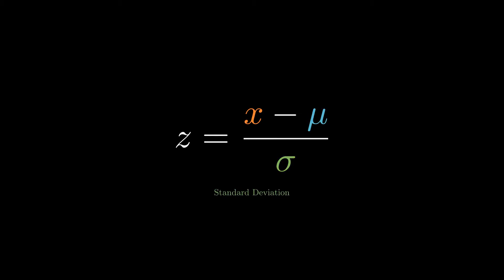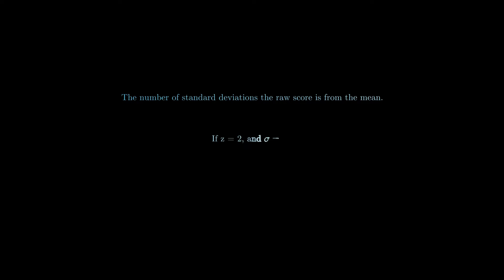and divide the difference by the standard deviation to ultimately get the z-score. The z-score represents the number of standard deviations the raw score is away from the mean. If you have a z-score of 2 and a standard deviation of 10, then the raw score corresponding to that z-score is 2 times 10 units away from the mean.